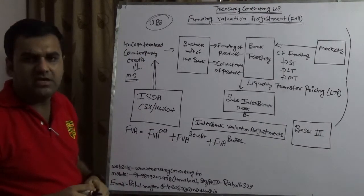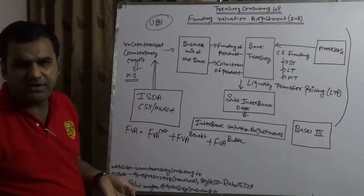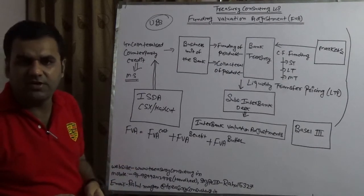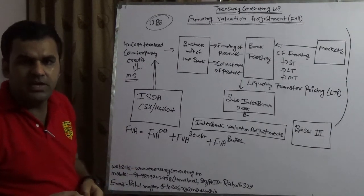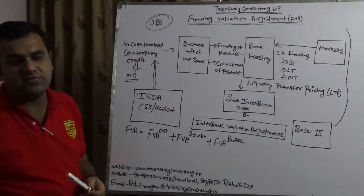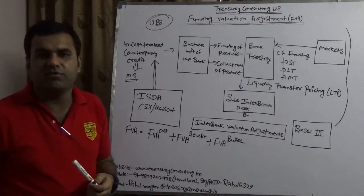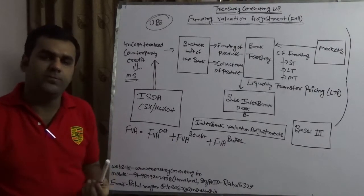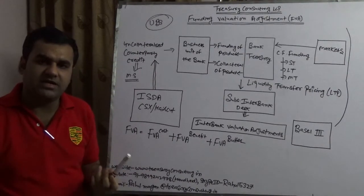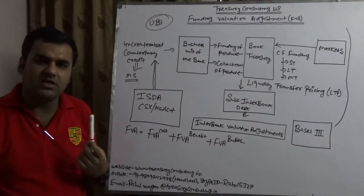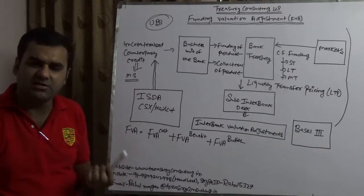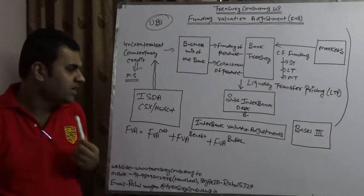UBS cannot say no to Microsoft because this is the number one software company of the globe. Since Microsoft is the number one software company, they prefer to be uncollateralized rather than collateralized. So what is the difference between collateralized and uncollateralized?